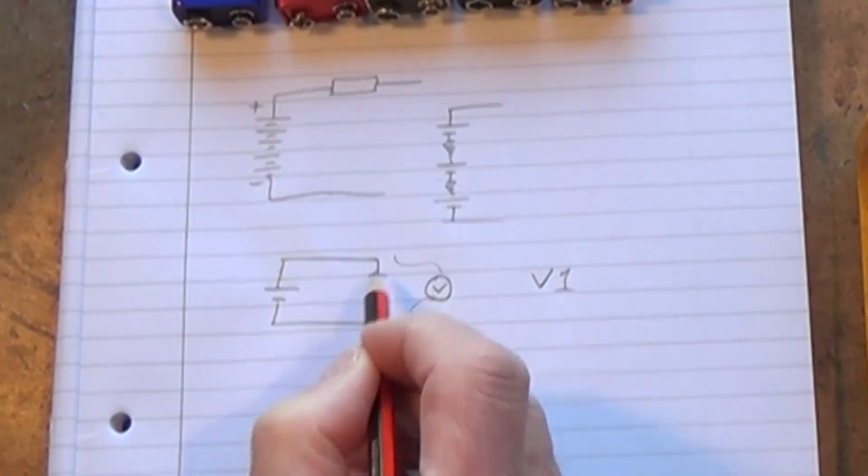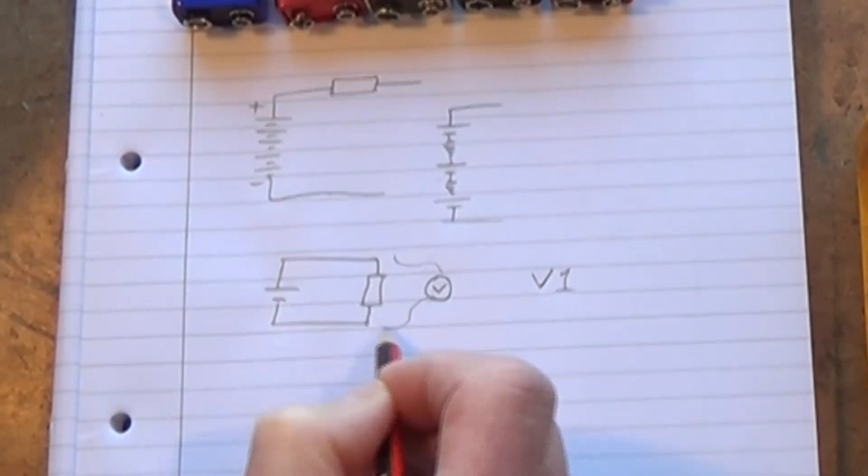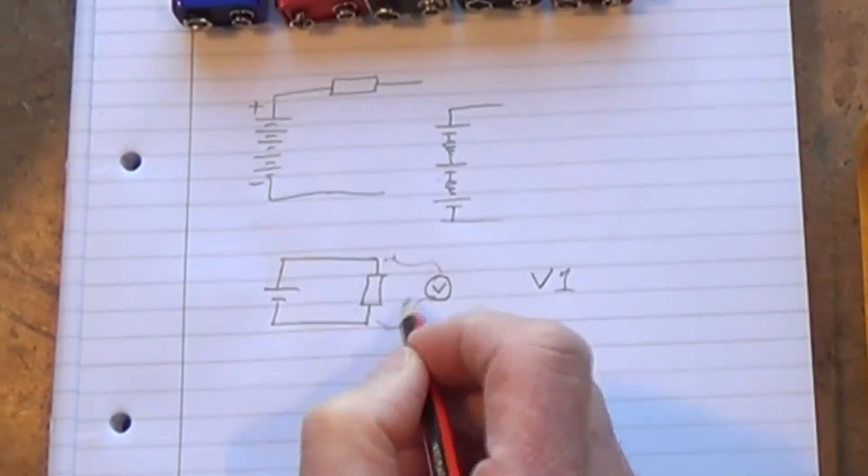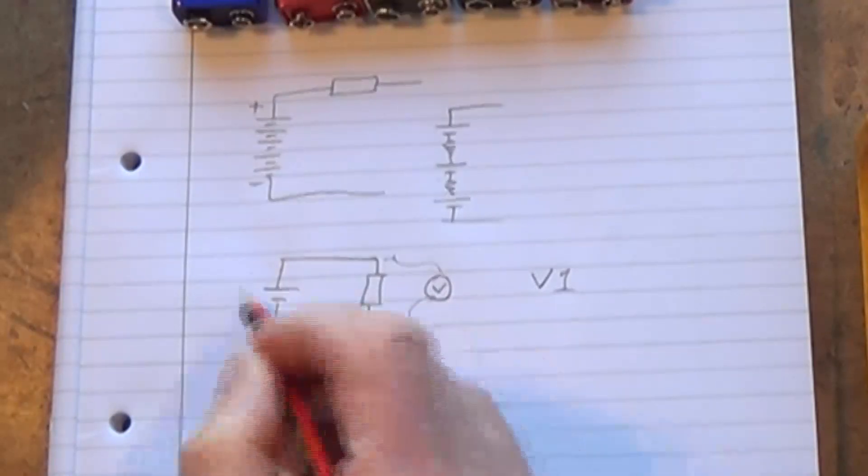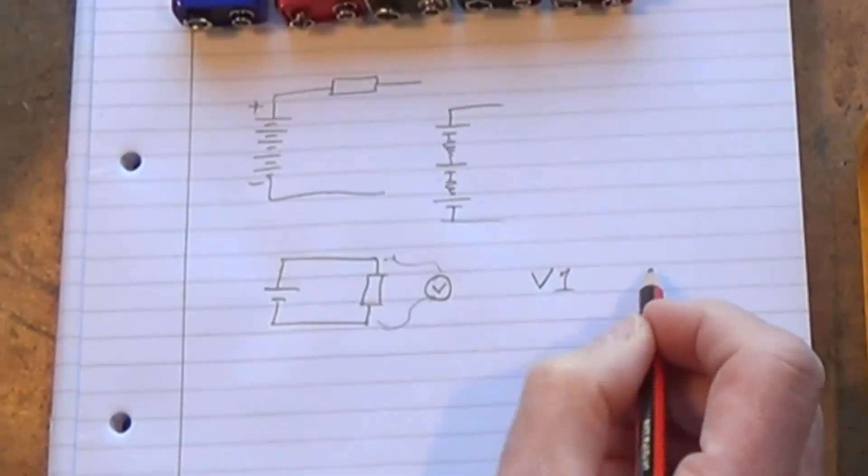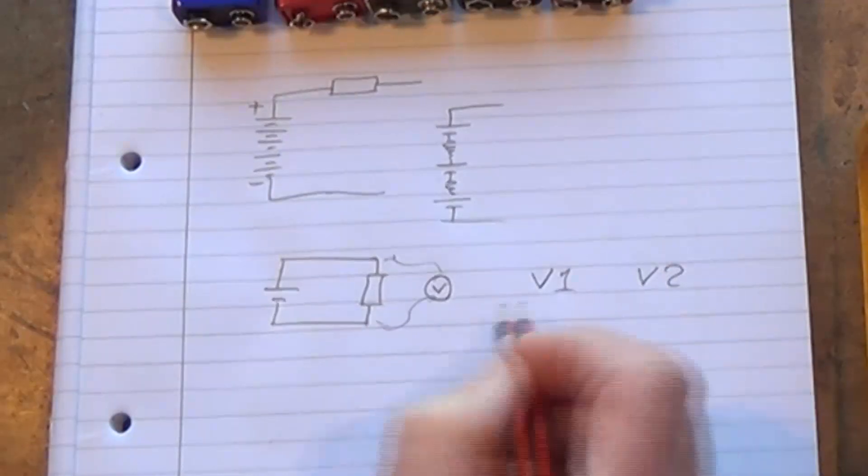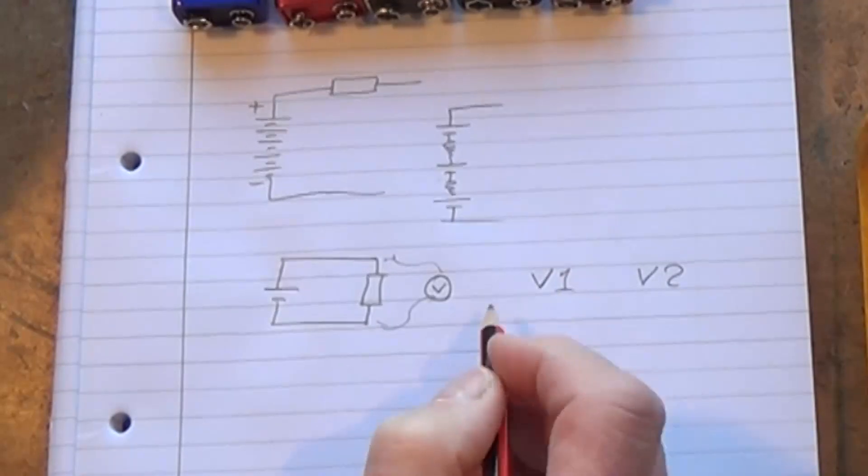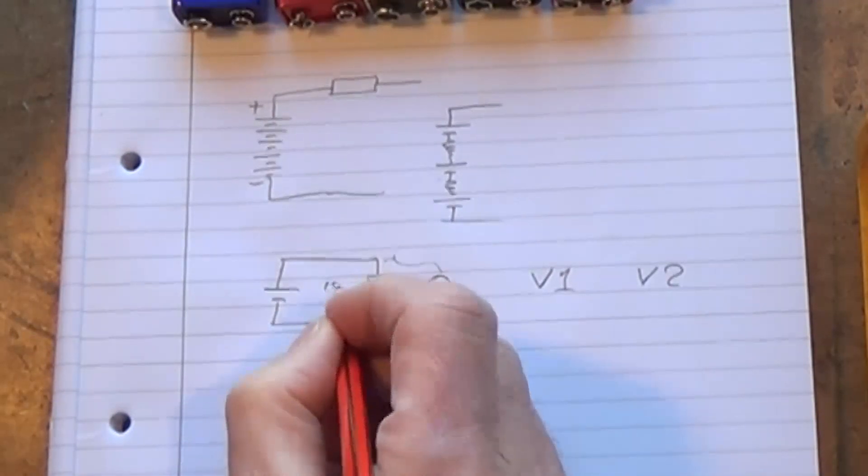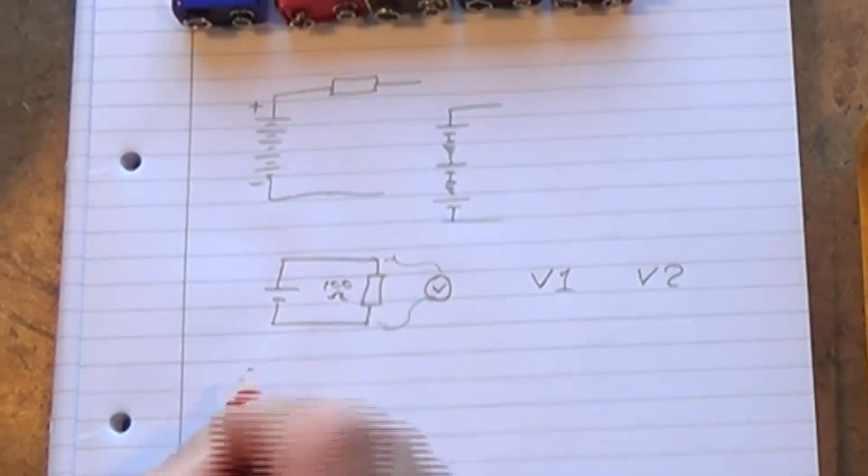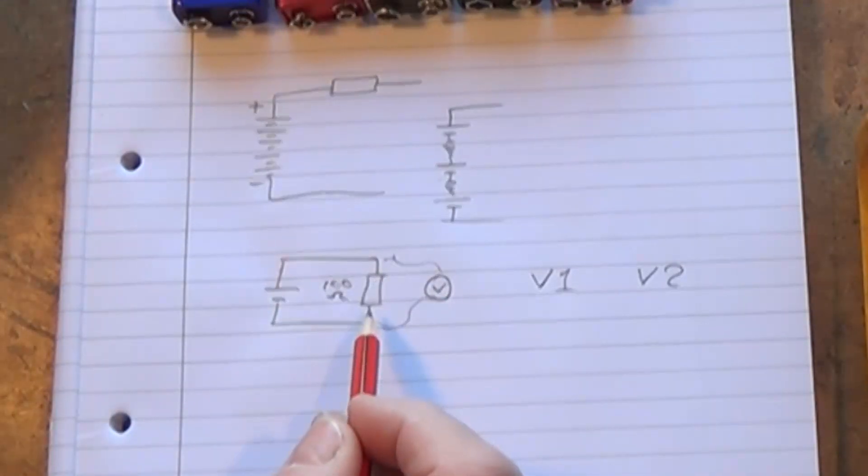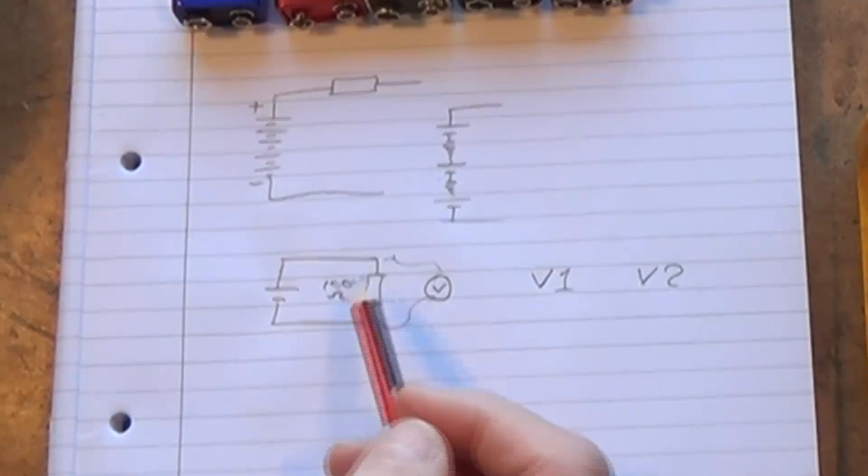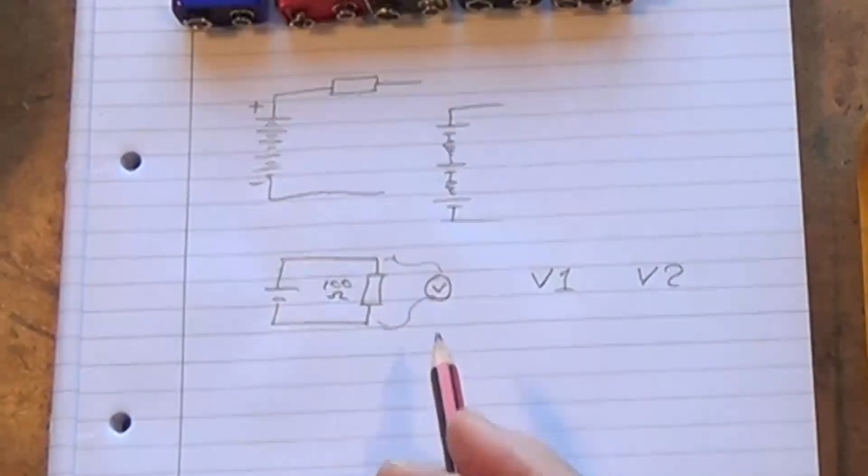Then if we place a 100 ohm resistor across there and measure the voltage across that resistor, which will be drawing some current, then we have V2. So we measure the open circuit voltage and the loaded voltage. Typically that would be a 100 ohm resistor. Nothing magic about the 100 ohms, it's just a sensible size or value of resistor to use for a battery like this.